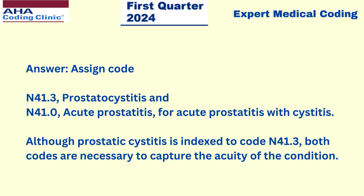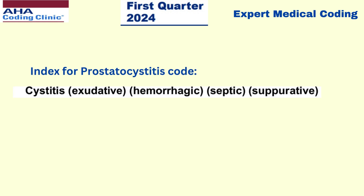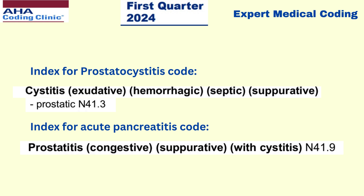Now let's see these codes in the index. For the prostatocystitis code, go to the main term cystitis in the index and under the sub-term prostatic — it will lead you to the code N41.3. For the acute prostatitis code, go to the main term prostatitis and under the sub-term acute — it will lead you to the code N41.0.